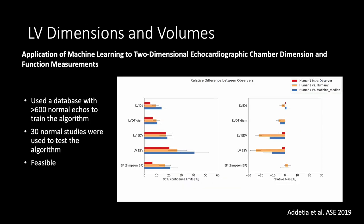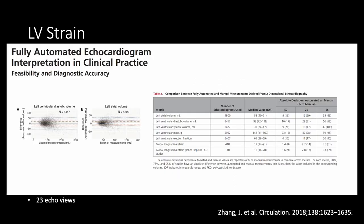There have also been preliminary studies from other groups looking at LV basal dimensions and ejection fraction, which have shown that compared to manual measurements the machine performs well. Automated algorithms are also being applied to LV strain analysis. The differences between the algorithm and manual assessments were very good for LV strain.